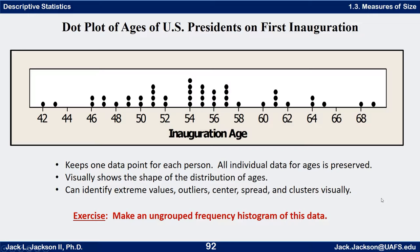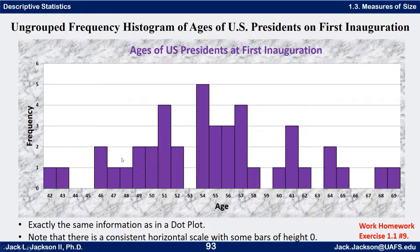Make an ungrouped frequency histogram for this data — go ahead and do that on your own. Press pause now. When you come back, you'll see that the ungrouped frequency histogram is really basically the same thing: instead of having two dots here we just have a bar that goes up to two, and instead of having one dot here we have a bar that goes up to one. We have some ages where we don't have a president being inaugurated at those particular ages.